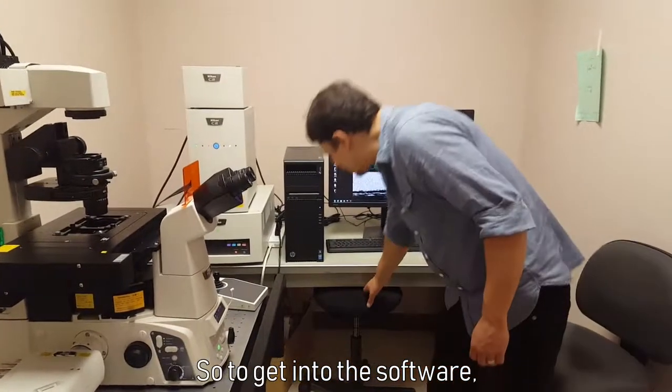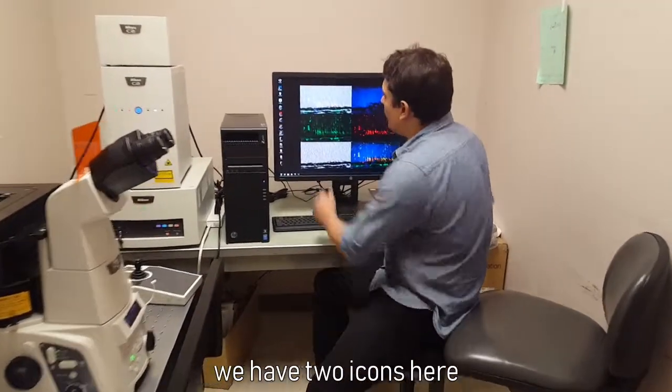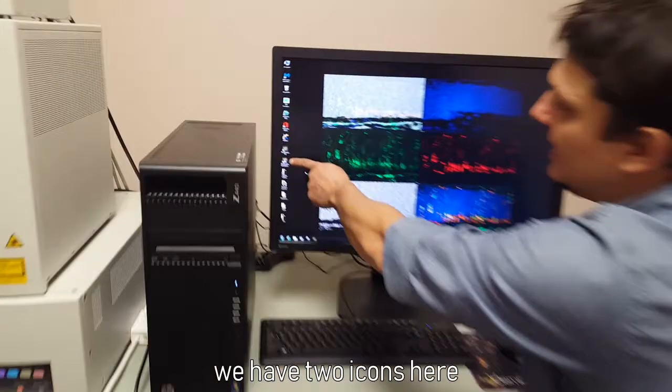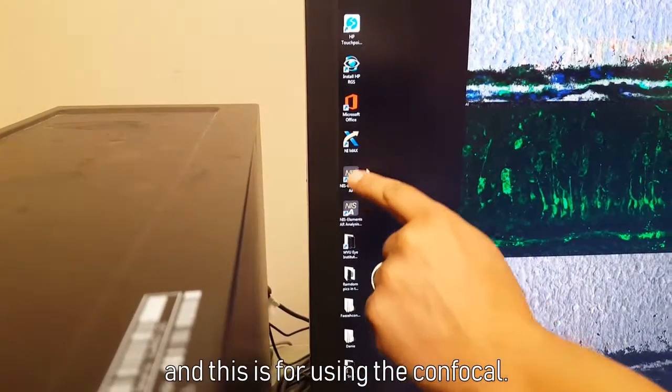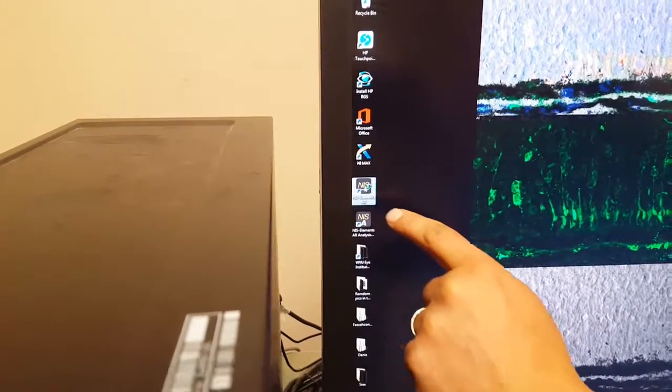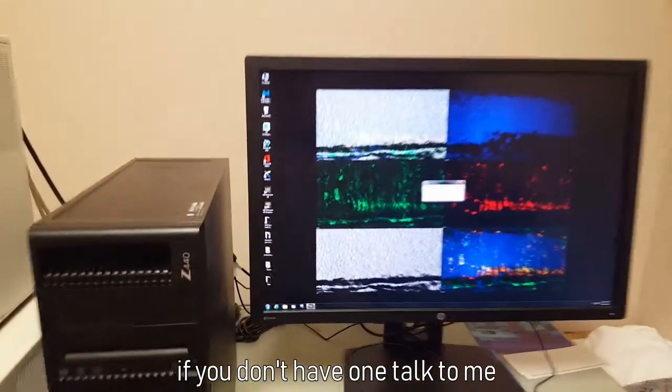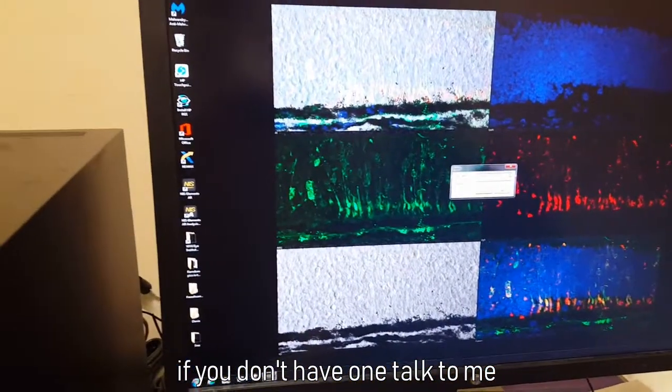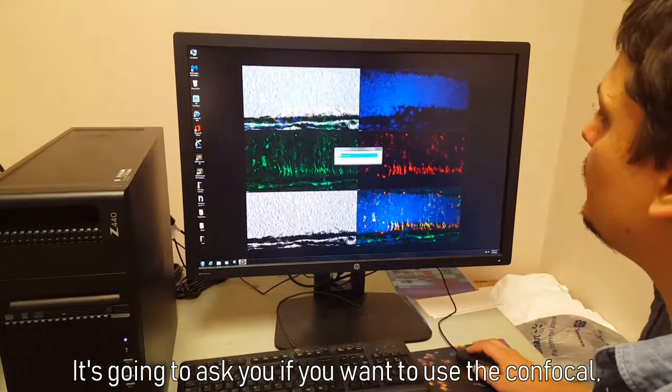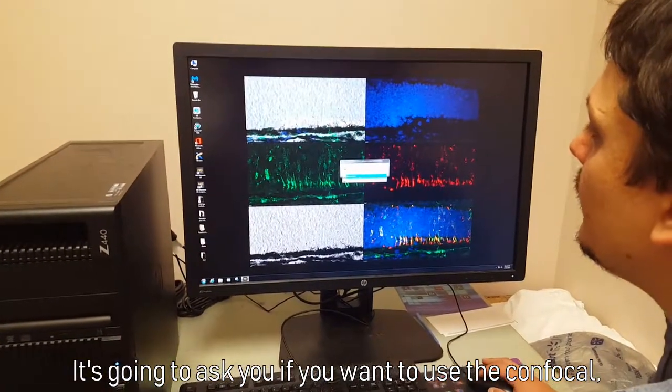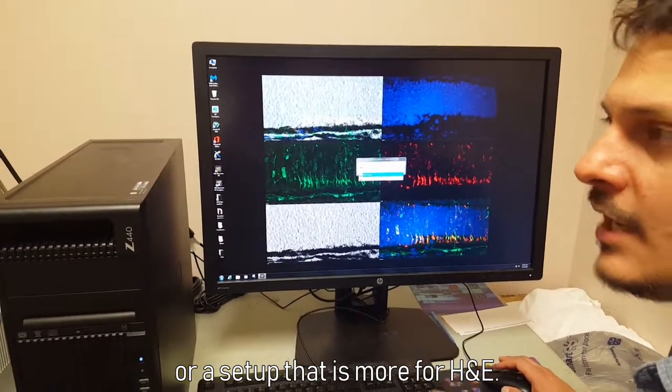So to get into the software we have two icons here. This one is just for image processing and this is for the confocal. You have to choose your user. If you don't have one, talk to me. Put your own password and it's going to ask you if you want to use the confocal or a setup that is more for H&E.